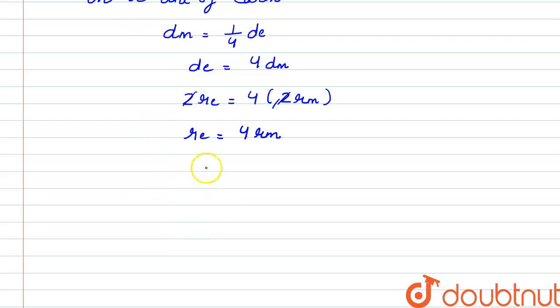And we know that if we assume the moon and the earth to be perfect spheres, so we know that the volume of a sphere is four by three pi r cube.